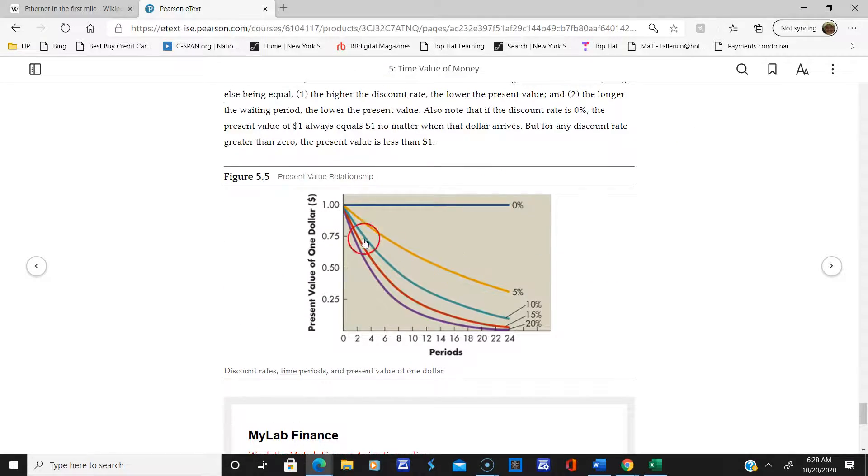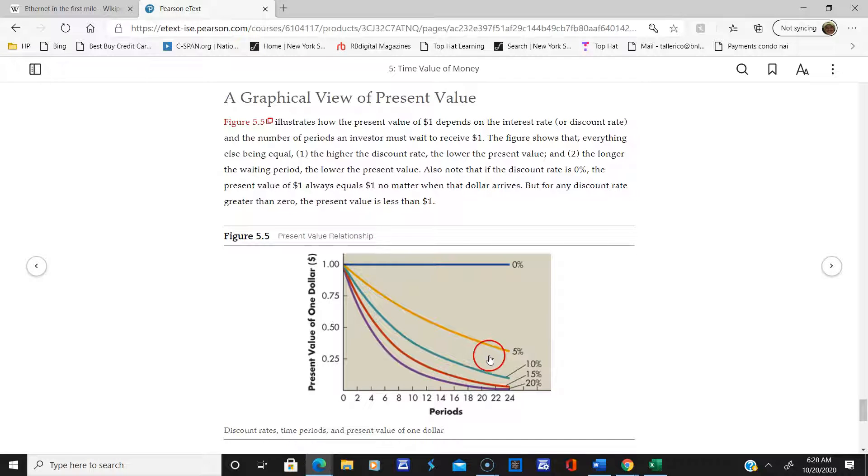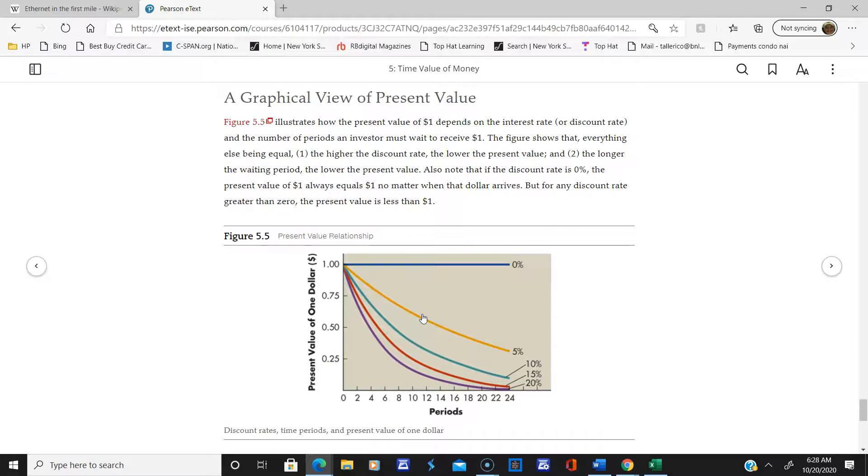Here's the graphical view of present value. The higher the interest rate you get in the future, the less you have to invest today because it'll grow much faster. This is the opposite of future value.